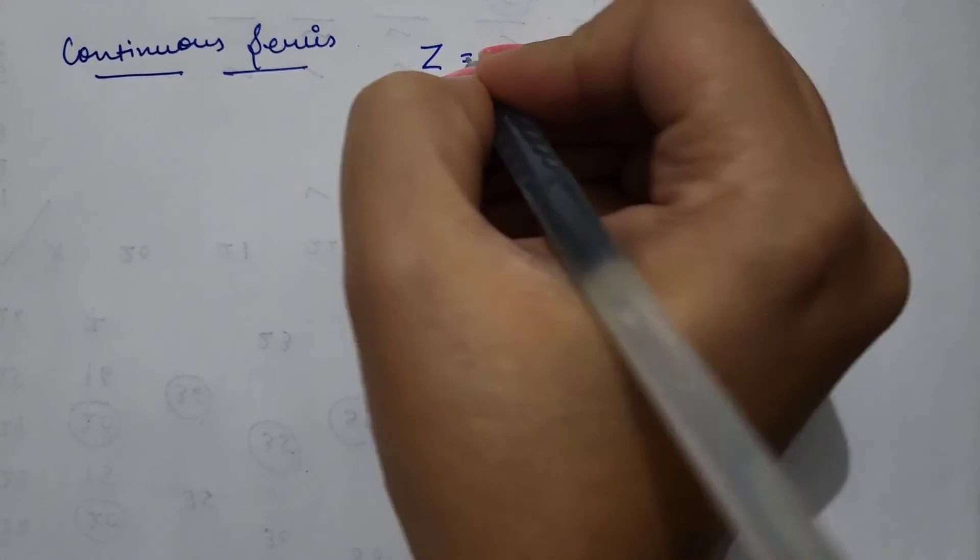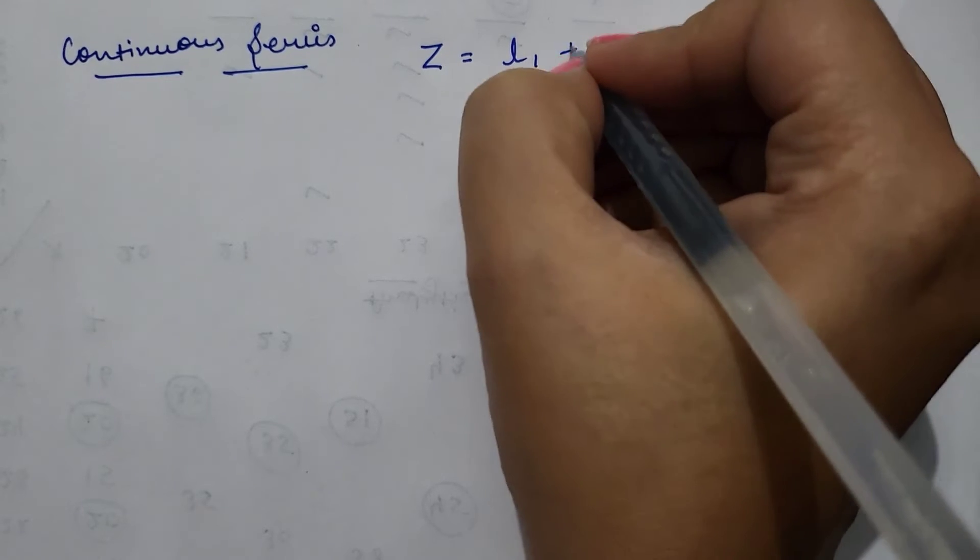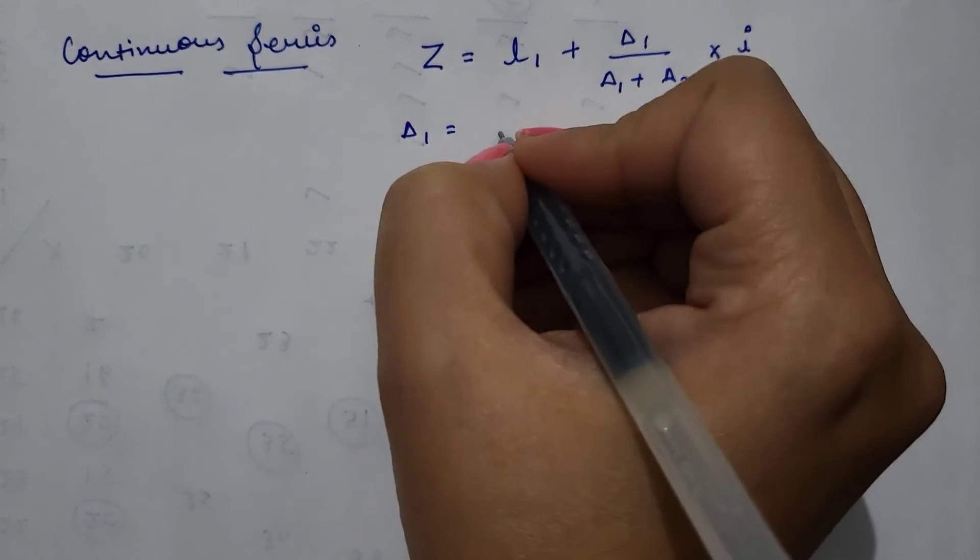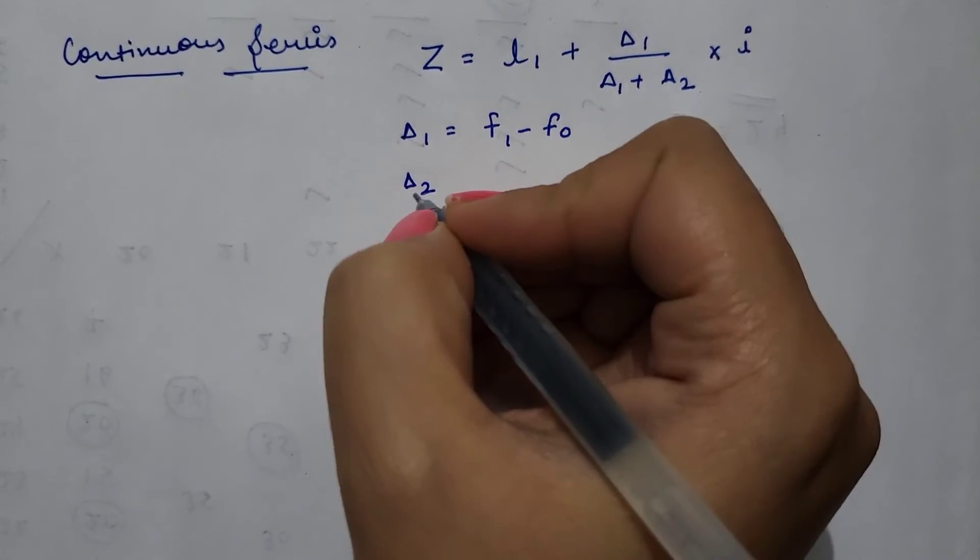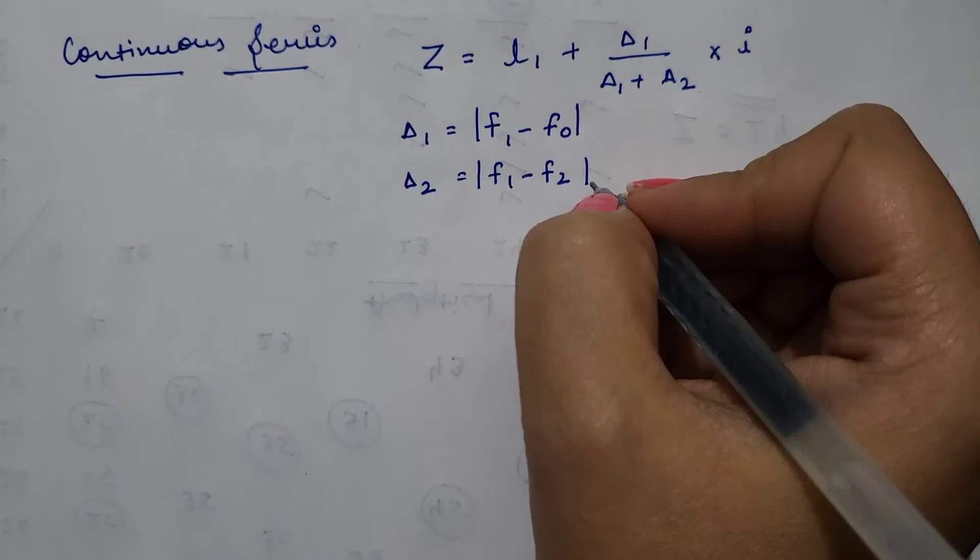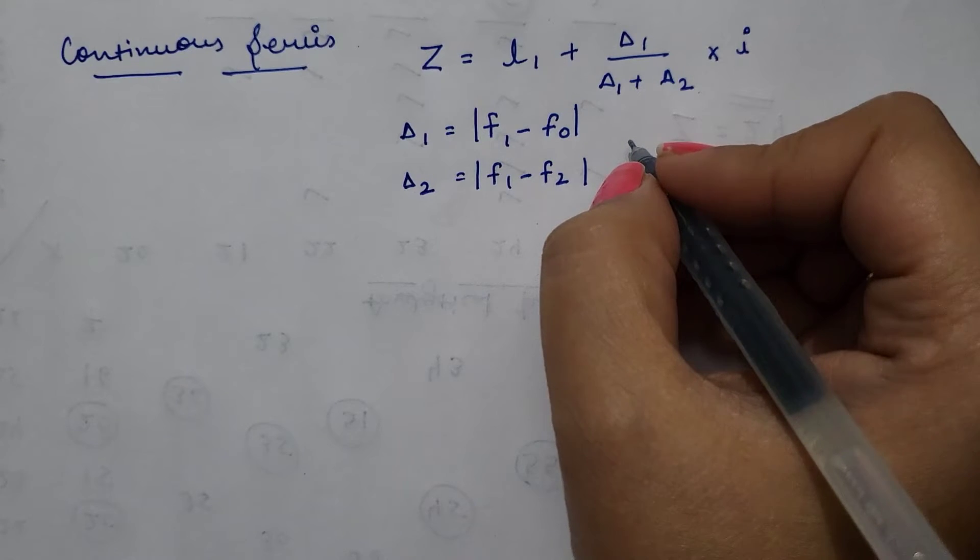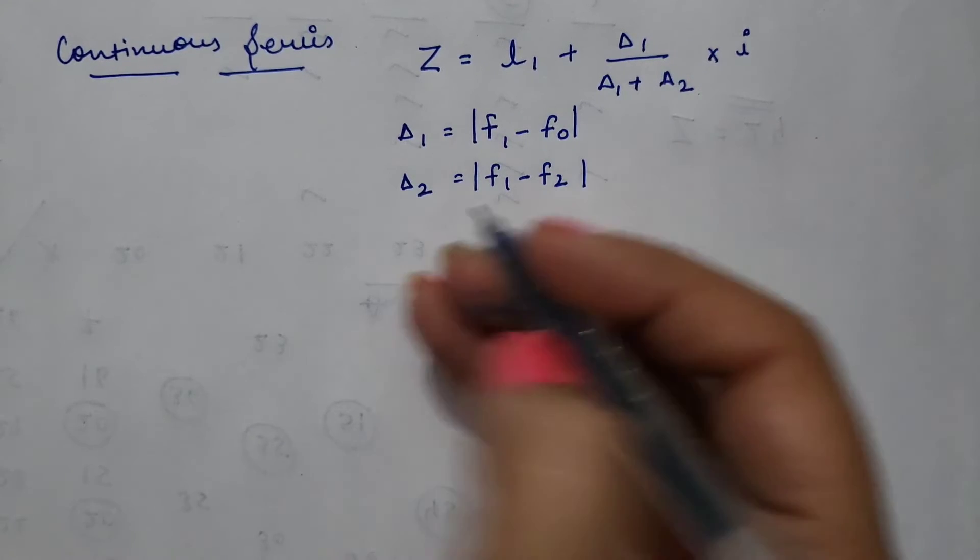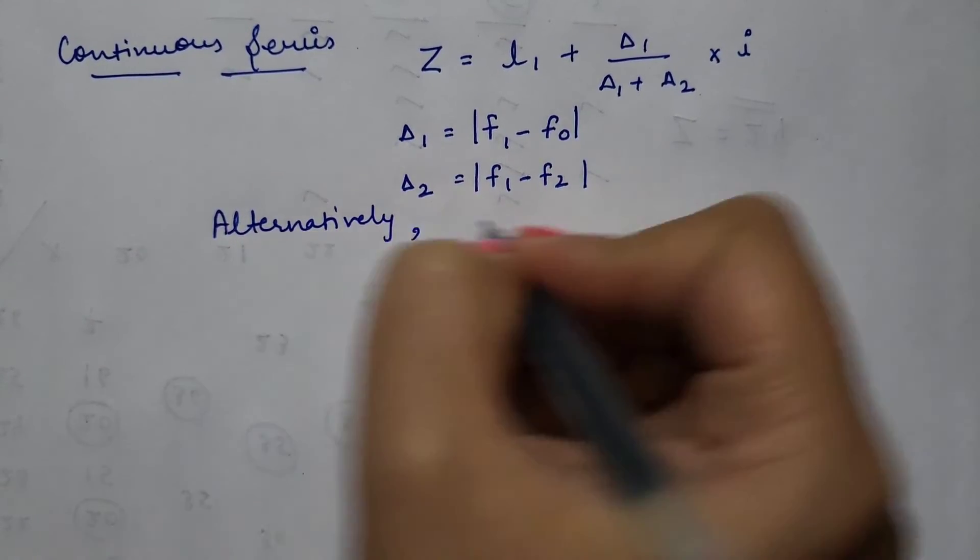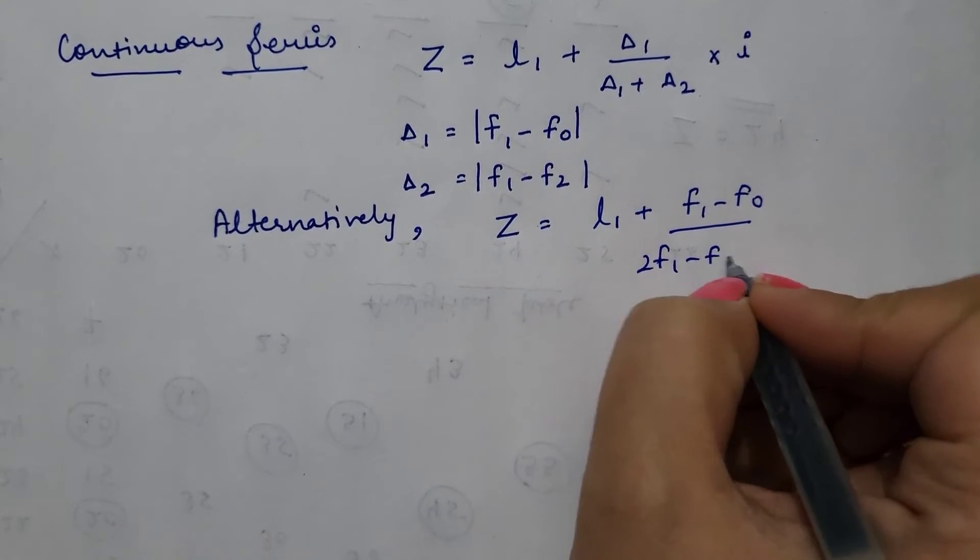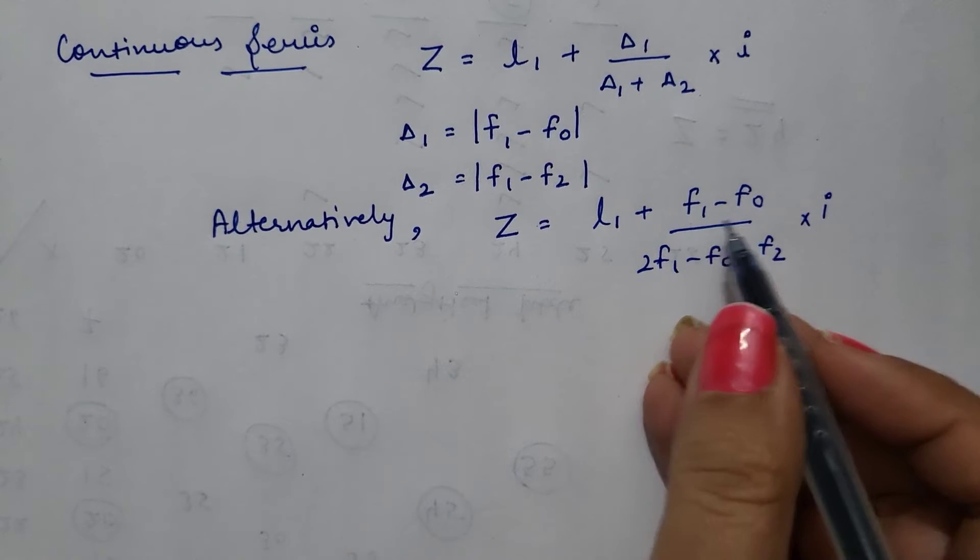In order to calculate mode in continuous series, we have to calculate mode with the help of formula: L1 plus delta 1 divided by delta 1 plus delta 2 multiplied by I. Here, delta 1 is F1 minus F0 and delta 2 is F1 minus F2. And we need to mode these items, means we have to ignore the signs of these differences.